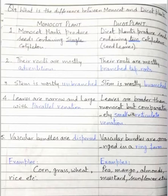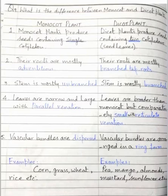By leaving a line, write the second point of monocotyledon plants: their roots are mostly adventitious. By leaving a line, write the third point in monocot: the stem is mostly unbranched.